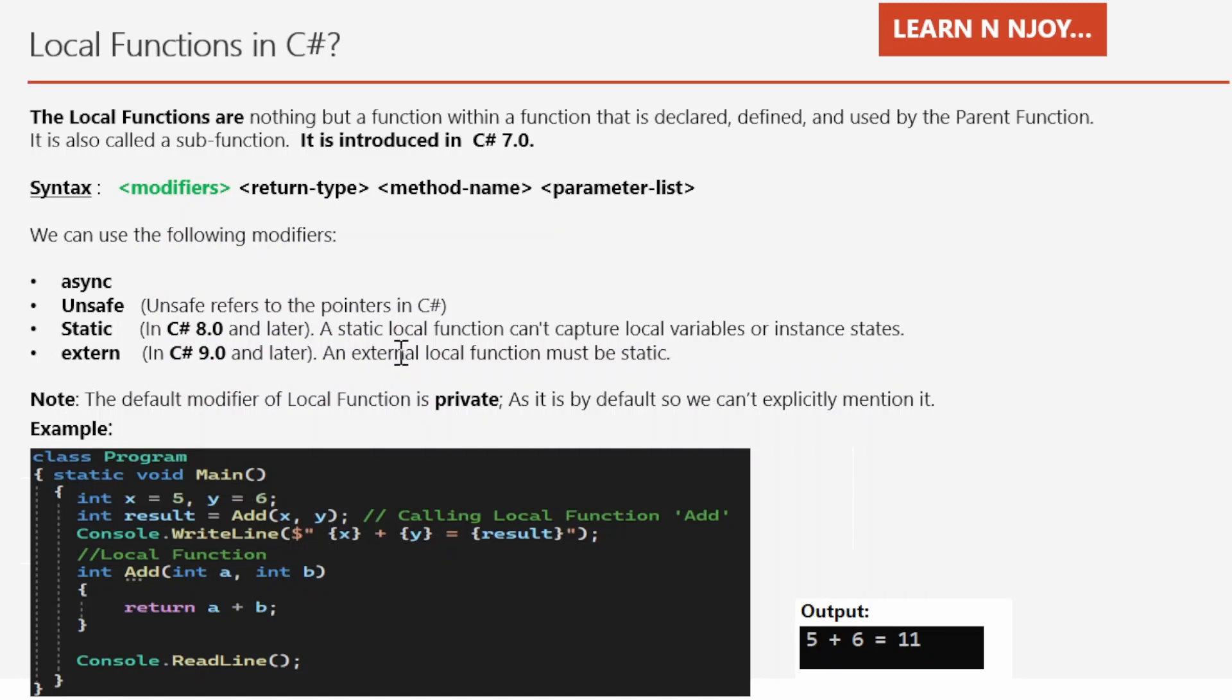Now let's understand the local function with the help of an example. See the example here. There's a class Program, inside that there's a main method. In the main method I have written this local function.